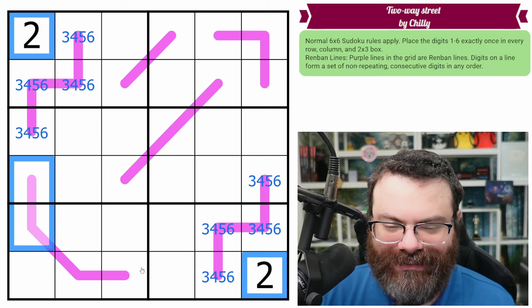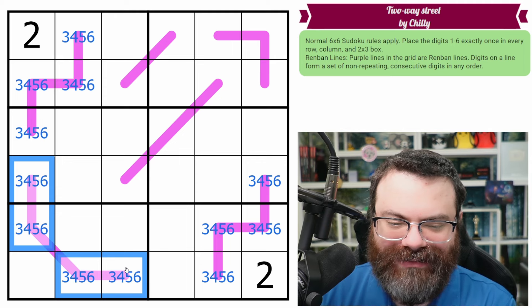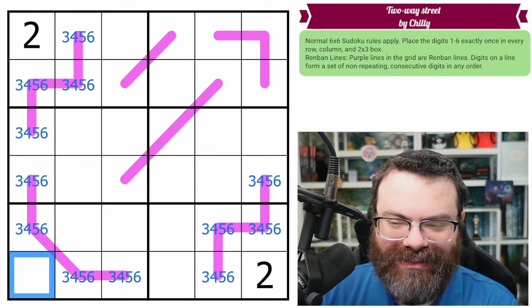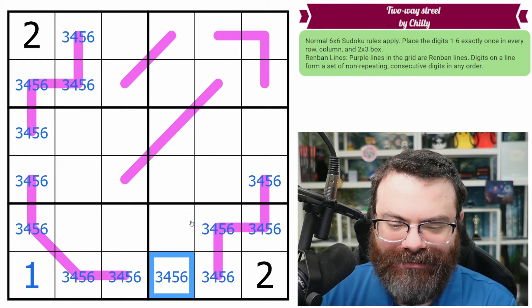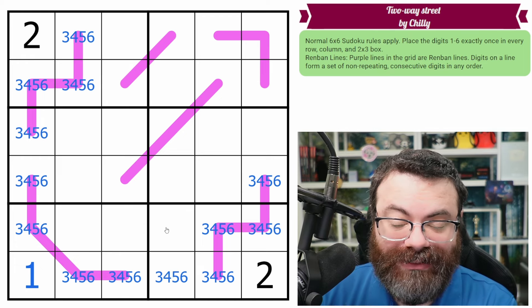Now, how about here? This also can't have a 2 on it. So this is also 3, 4, 5, 6. So this is the 1 for the column. I guess this is another 3. While we're marking 3, 4, 5, 6s, that's another one.